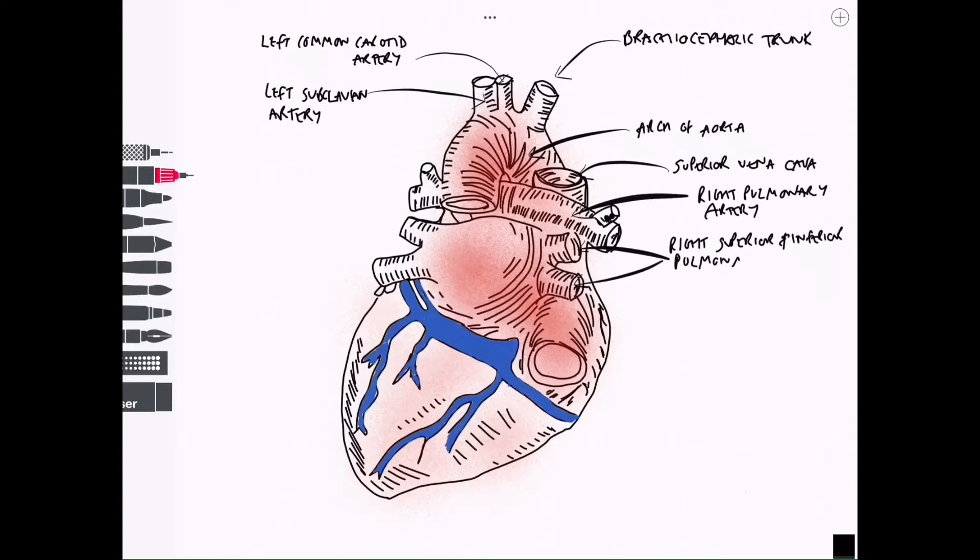We can see all of the left atrium from a posterior view, and inferior to that we have the inferior vena cava. So all of these right hand side vessels appearing on the right hand side of the image because this is a posterior view.